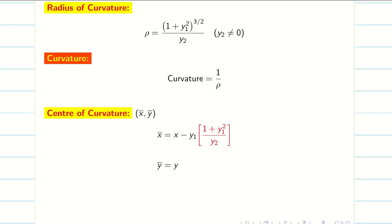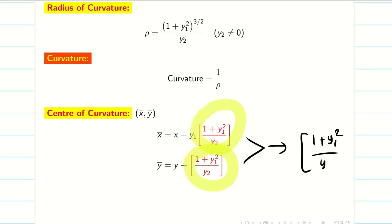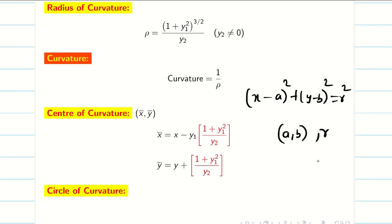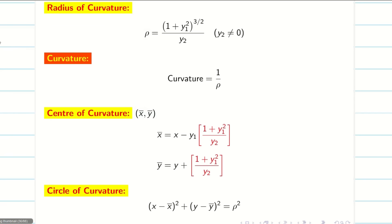For y bar, notice that the term (1 plus y1 squared) divided by y2 is common to both formulas. So if I find this term first, then adding it to y gives y bar, and multiplying it by y1 and subtracting from x gives x bar. Finally, the circle of curvature: using the general equation of a circle (x minus a) squared plus (y minus b) squared equals r squared, with center x bar comma y bar and radius rho, the circle of curvature is (x minus x bar) squared plus (y minus y bar) squared equals rho squared.